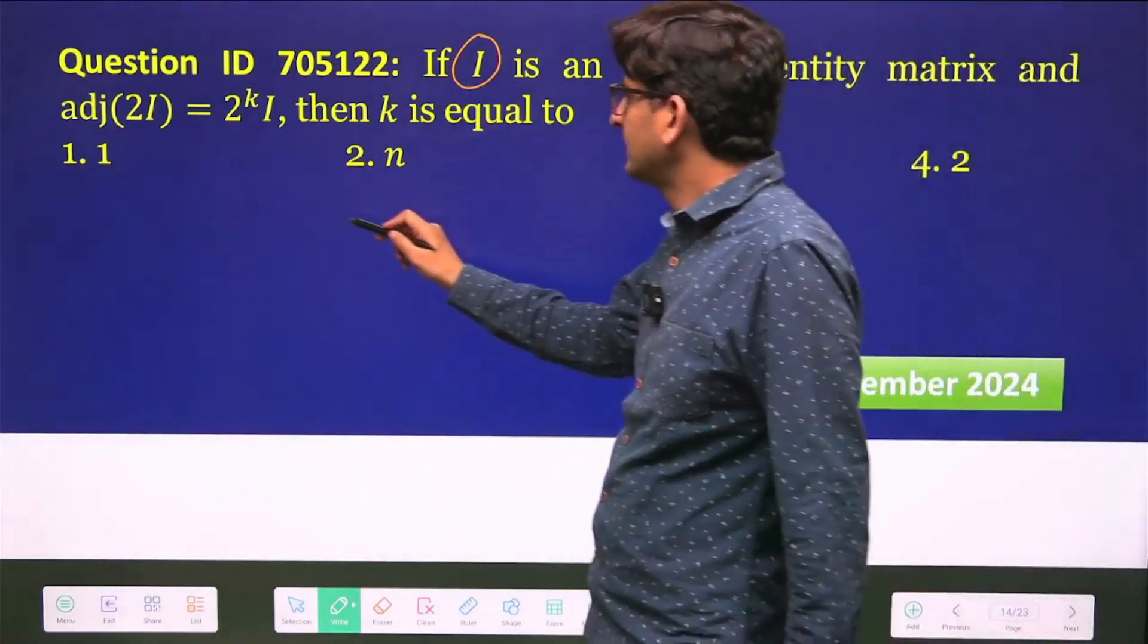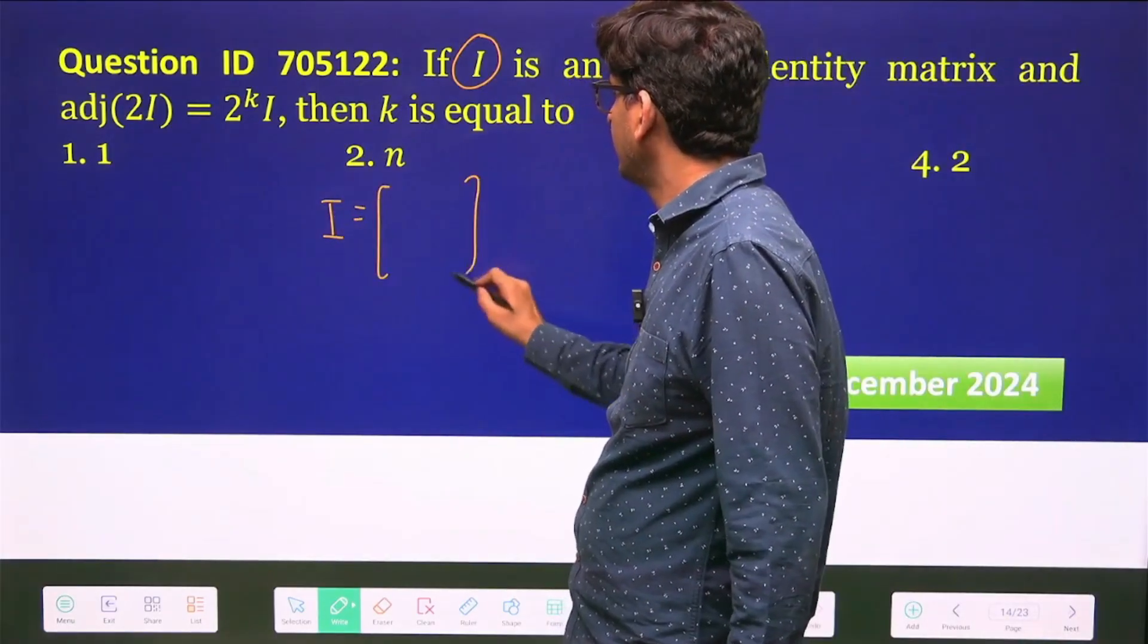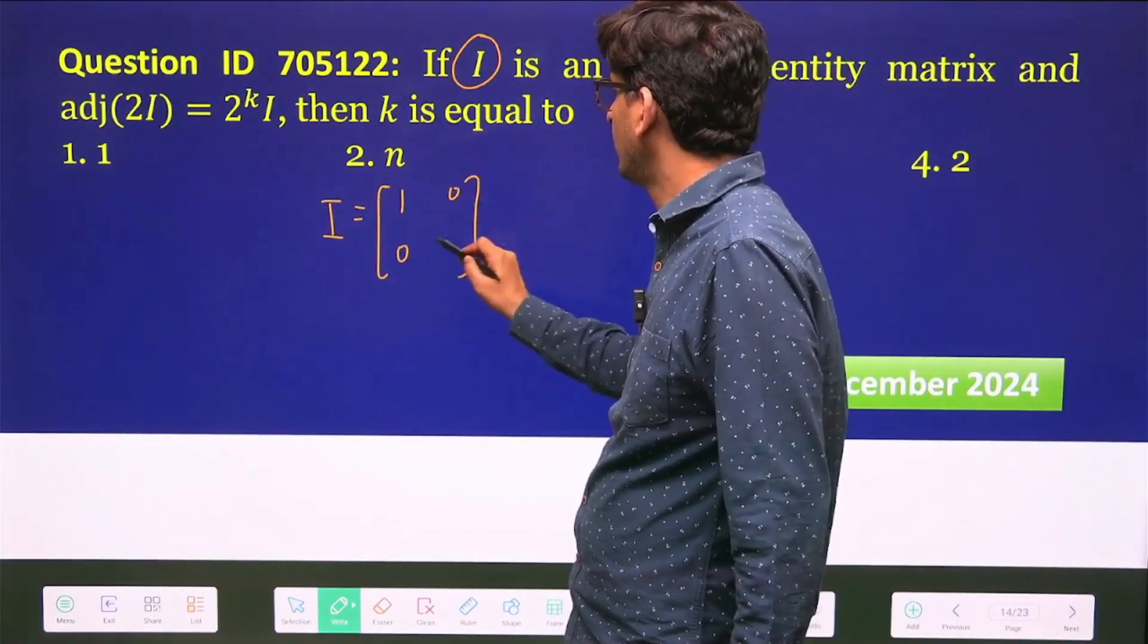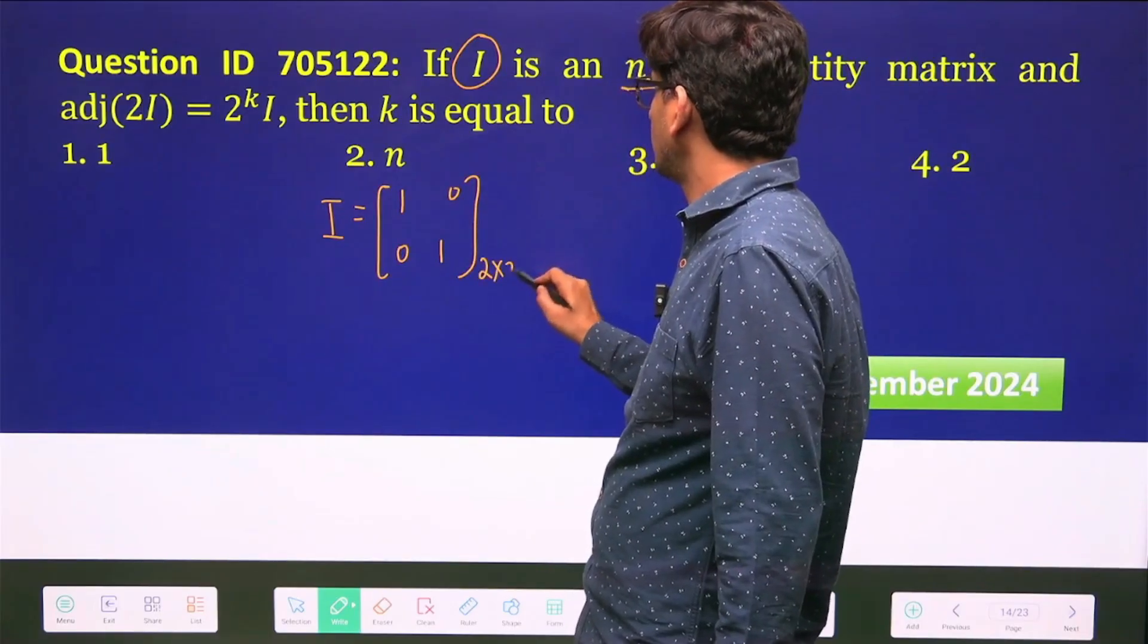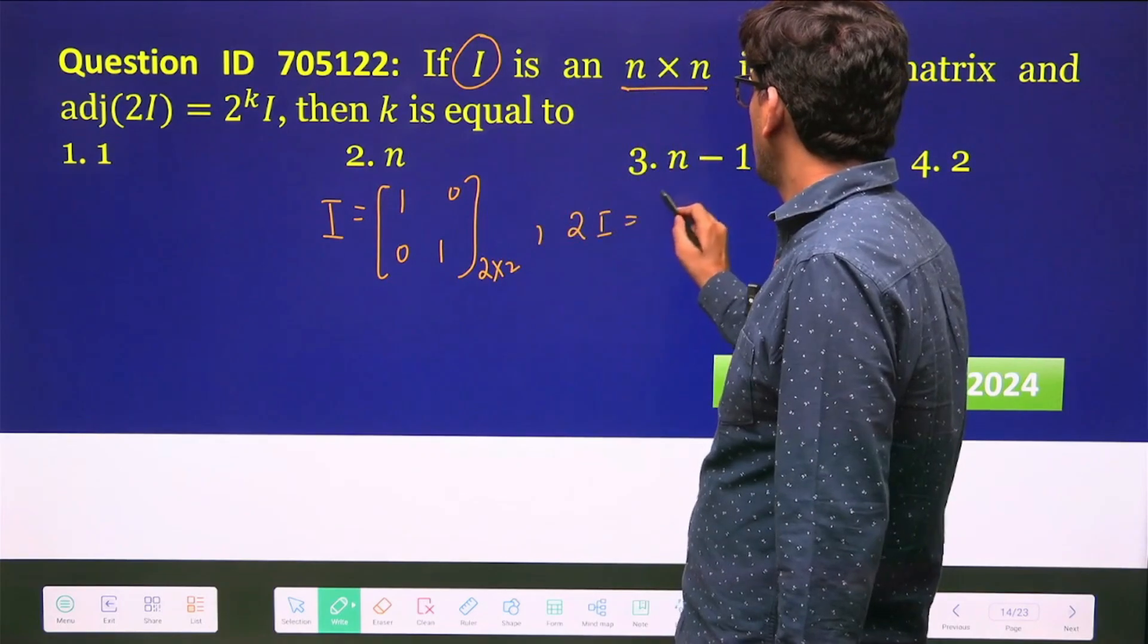What is 2×2 identity matrix? It is [1 0; 0 1]. This is a 2×2 identity matrix. So what will become 2I? 2I will become [2 0; 0 2], correct?